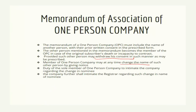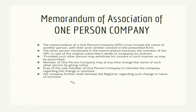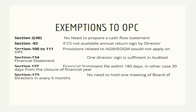The duty of the sole member of the one person company is to intimate the company regarding any change in nominee. If the nominee changes, you must intimate the ROC within the stipulated period. The company shall further intimate the Registrar regarding such change in the name of the nominee. One intimation goes to the ROC, another to the company — this is an essential requirement. If any change occurs, you inform both the ROC and the company.